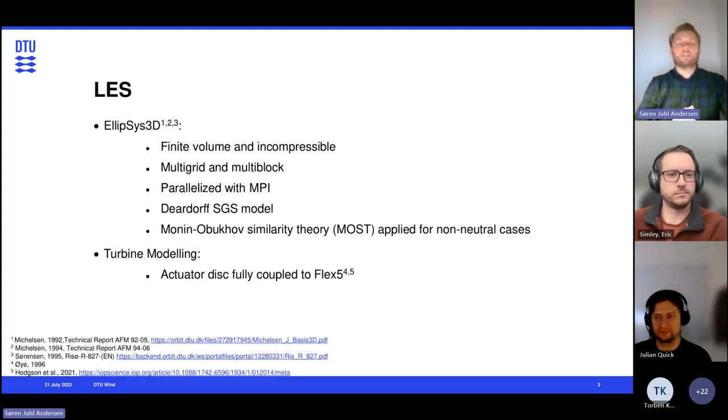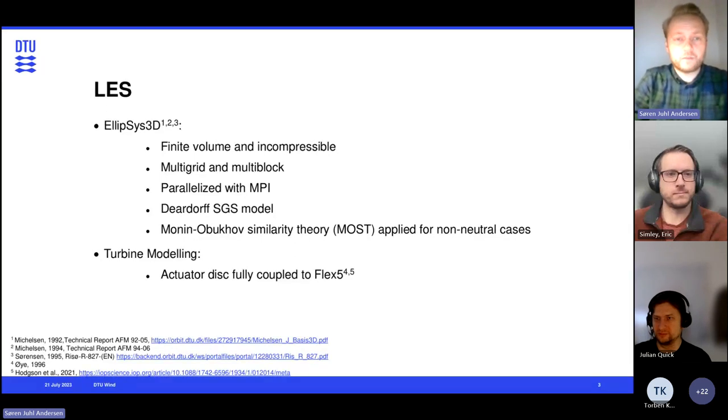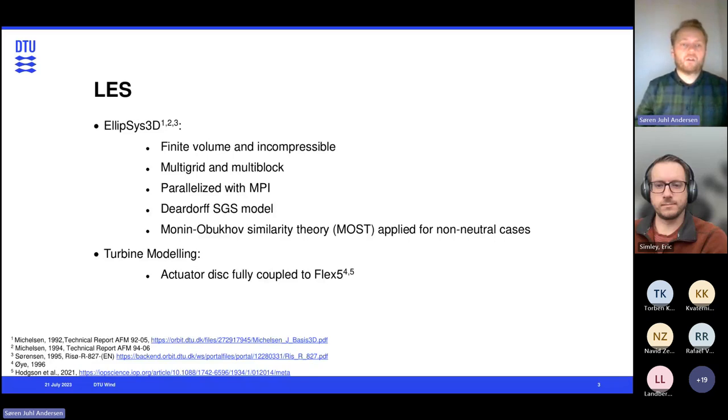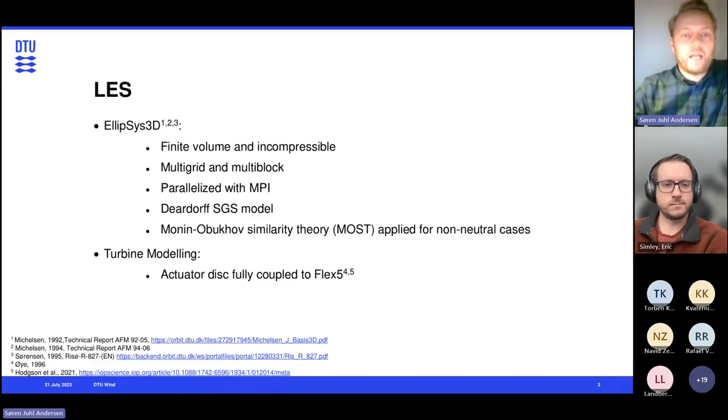So we're going to do this with LES. I won't go too deep into it, but we're going to use Ellipsis 3D, which is a code here at DTU. It's finite volume and incompressible. It's multi-grid and multi-block. It's highly parallelized using MPI, and for these studies, we use the Dierdorf subgrid scale model. We also assume Monin-Obukhov similarity theory for the non-neutral cases. And then our turbine, we're going to model that using an actuator disk, which is fully coupled to Flex 5, so we have a controller and the blades are deflected.